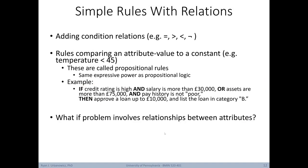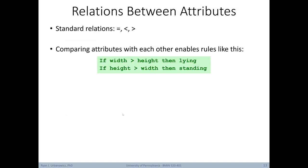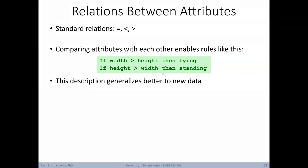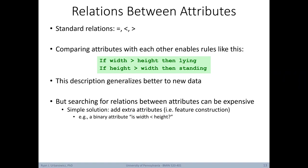When we want to look at relationships between multiple attributes, simple propositional rules aren't sufficient — we need a more expressive representation, similar to moving from propositional to first-order logic. For example: if width is greater than height, then the consequent is 'lying'; if height is greater than width, then the consequent is 'standing.' This kind of rule generalizes better to new data, but searching for relations between attributes can be computationally expensive.